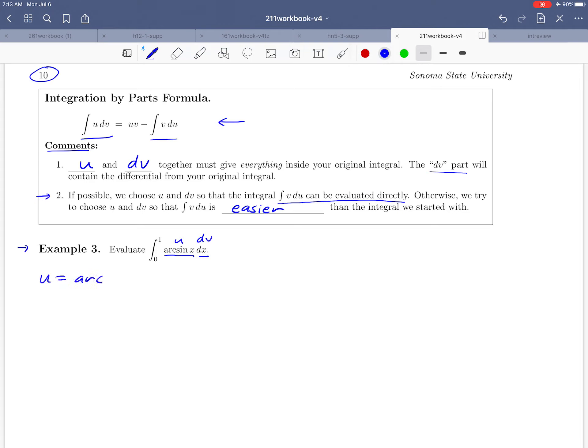So we'll let u be arc sine of x, and dv is dx. Then the first thing that we need is the du and the v that go with that. We need to take the derivative of arc sine of x. That's a formula that you probably saw in calculus one, but one that you probably didn't use very much. The derivative of arc sine turns out to be one over the square root of one minus x squared. And then if dv is dx, we need to integrate dx. That's like integrating the function one and just getting x for our antiderivative. So those are our pieces.